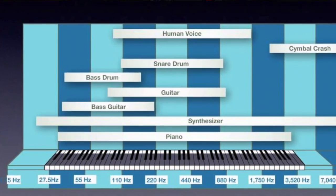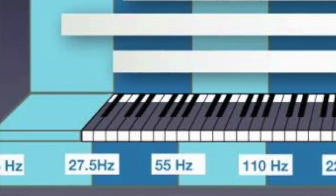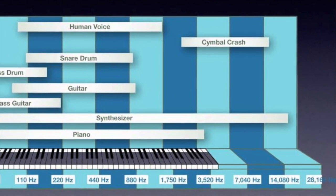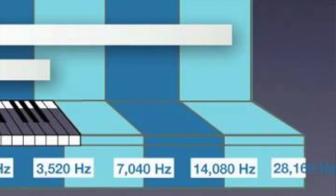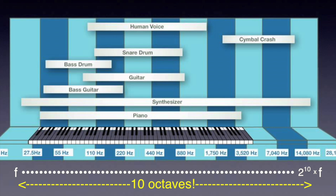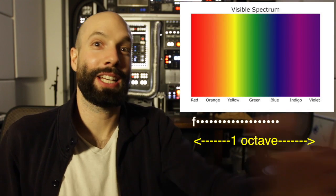Most people can hear notes as low in pitch as 20 Hertz — 20 vibrations per second. But a lot of people, especially children, can hear notes as high as 20,000 Hertz — 20,000 vibrations per second. That's 10 doublings in frequency, 2 to the 10th power times higher in pitch. Our hearing range of 10 octaves is 10 times better than our seeing range of one octave.